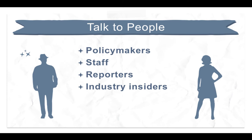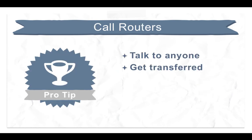Every research project can benefit from interviewing people — researchers can discover people's interests, information, and opinions. Here's a tip: your call might be answered by a call router, the computer voice that tells you to press 1 if you know your party's extension. If you're stuck in one of these call routers and unable to talk to anyone, just get anyone on the phone — it doesn't matter who — and tell them who you want to speak to. You could say, 'Hi, I'd like to talk to the person in charge of overseeing government contracts.' They'll likely direct you to the right person.